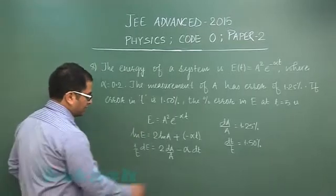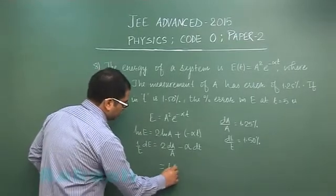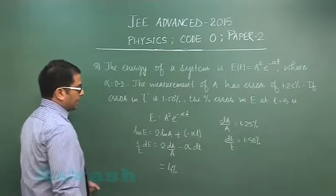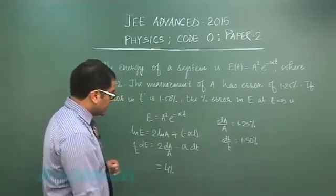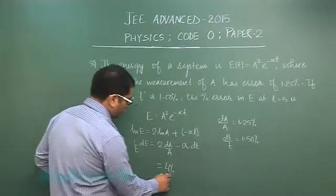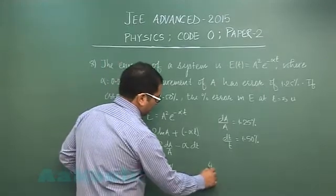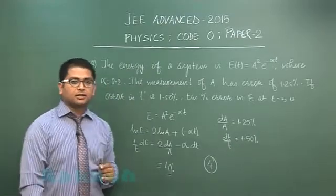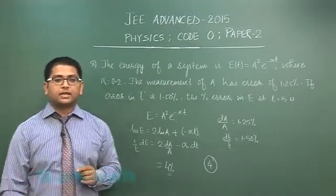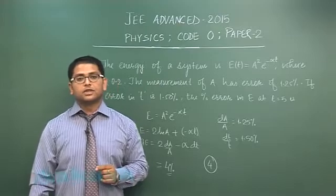Plugging all this value, this dE by E would come out to be 4%. And the percentage error in E is required in integer between 0 to 9, so 4 would be the correct option. So 4 is the answer for question number 8. With this we end up section 1, now we'll move to section 2.